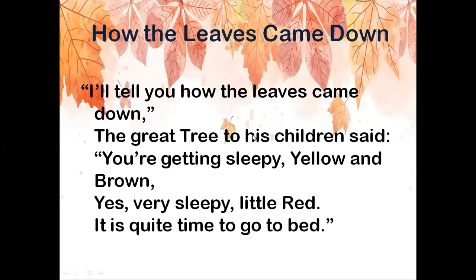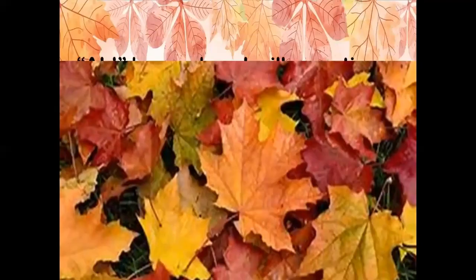First I will read the entire poem for you so you can understand it better. 'I'll tell you how the leaves came down. The great tree to his children said: You're getting sleepy, yellow and brown. Yes, very sleepy, little red, it is quite time to go to bed.'